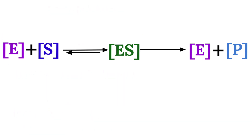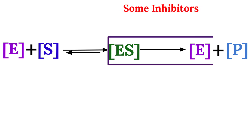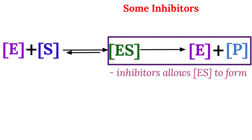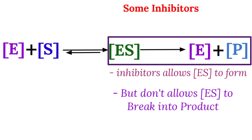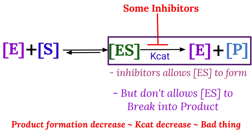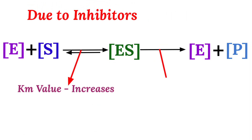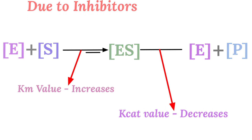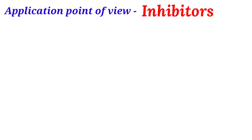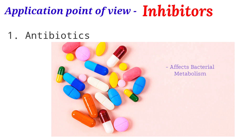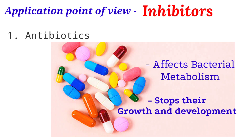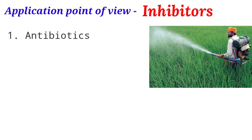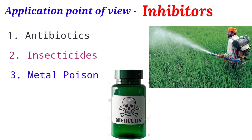In the second case, some inhibitors act upon the enzyme-substrate complex. They let the enzyme-substrate complex form, but they do not allow the product formation step, which is reflected by the Kcat value. So Kcat value decreases, which is again a bad thing for any enzyme. In day-to-day life we know some inhibitors in the medical field — antibiotics affect bacterial metabolism by inhibiting enzymes, and we are also familiar with insecticides and metal poisons which act as inhibitors on enzymes.